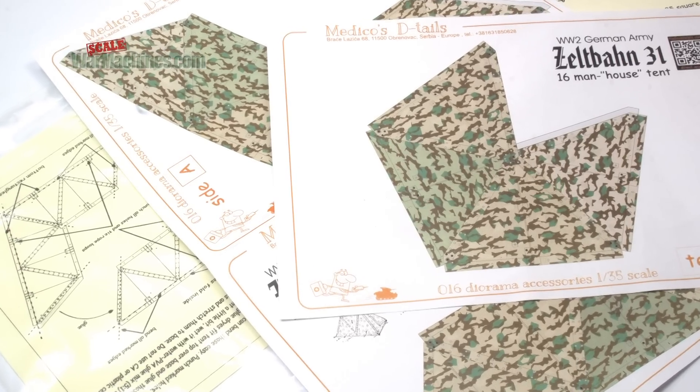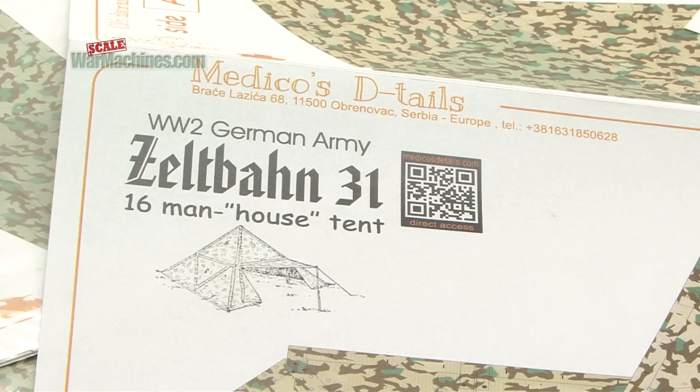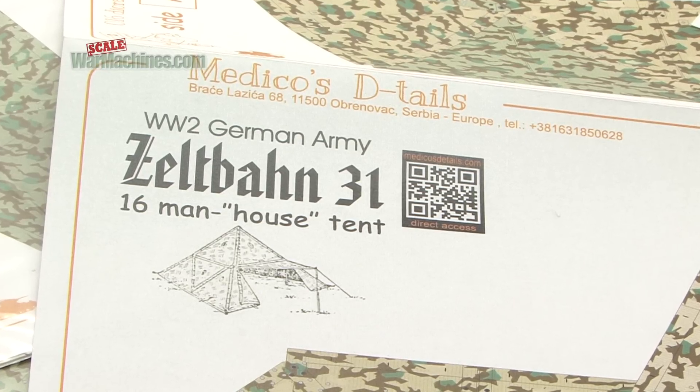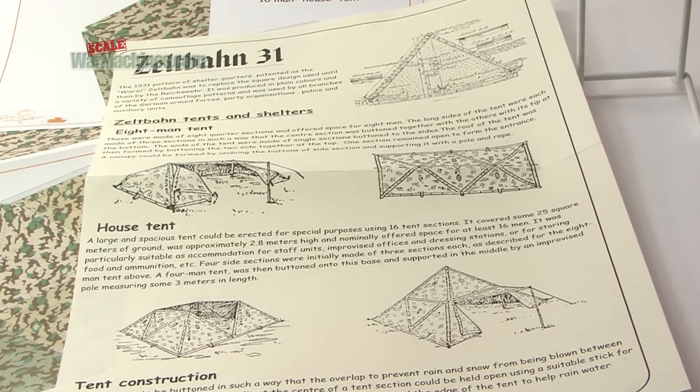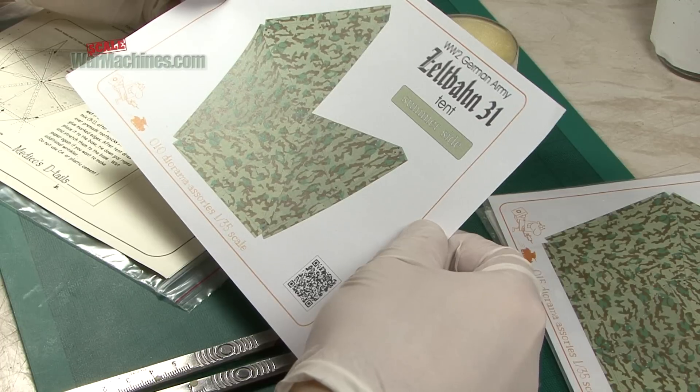Zeltbarn was a printed type of weatherproof covering. It had a camouflage scheme printed on it but there are also other versions and it was a sort of modular design that could be clipped together to create different sized tents or shelters.